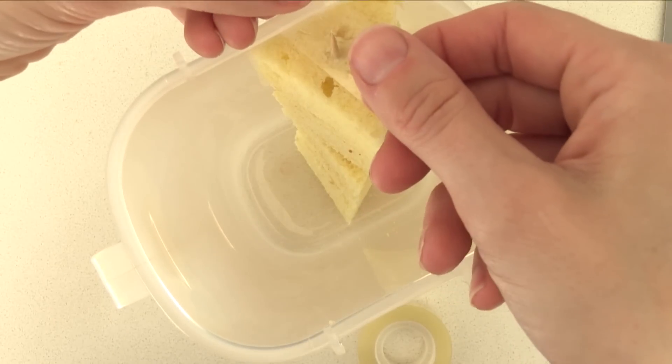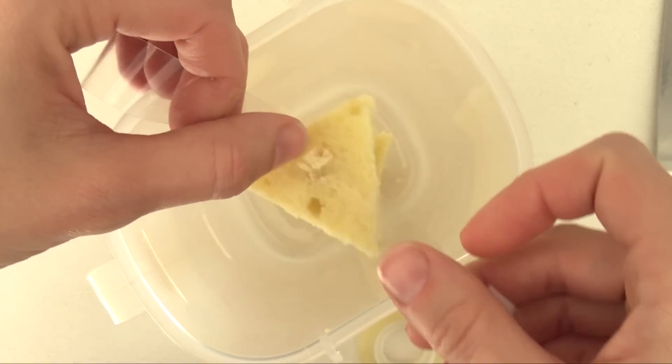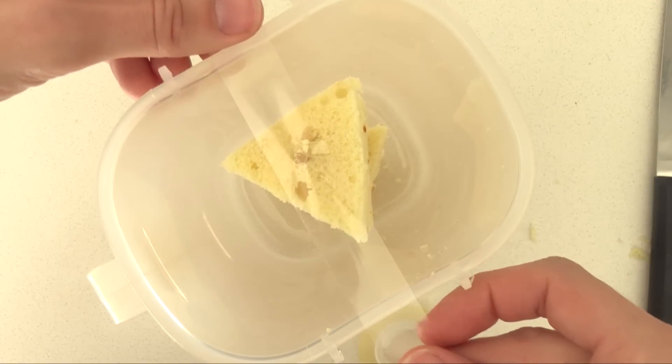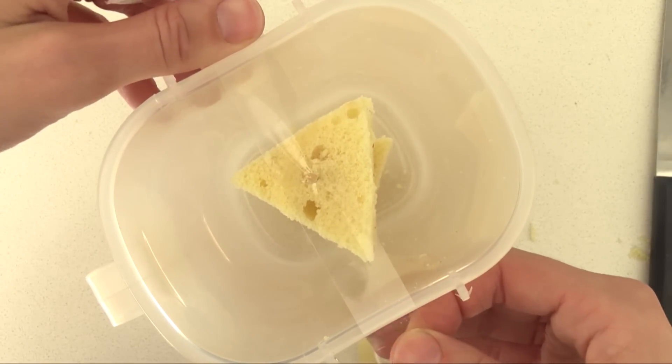Then take some tape and put it over the skewer and then down on each side of the container. Turn the container and repeat that going over in the opposite direction and that will hold the triangle right in the centre of the container where you need it.